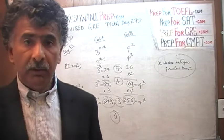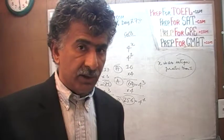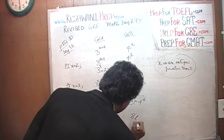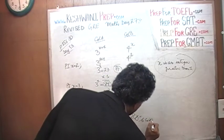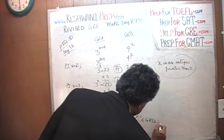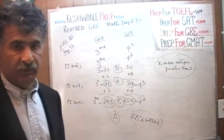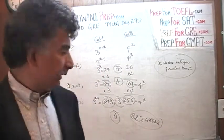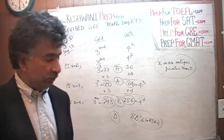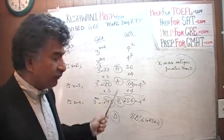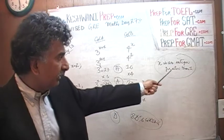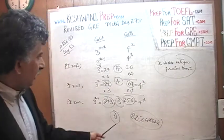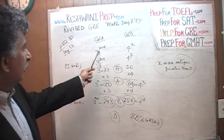Believe it or not, when this question appeared in the real GRE, 80% of people missed it — only one fifth of test-takers got the right answer. There is one very simple reason for it: they stop after two tries. You must keep on going. Either they stop after two tries, or they're not paying attention to the constraint that x equal to 1 is not allowed.